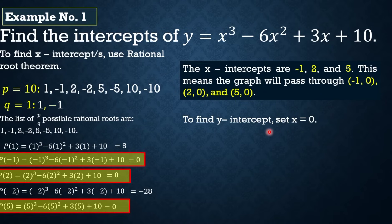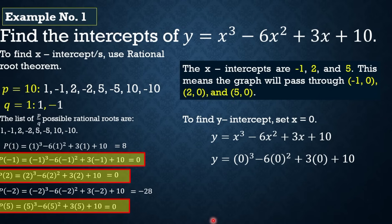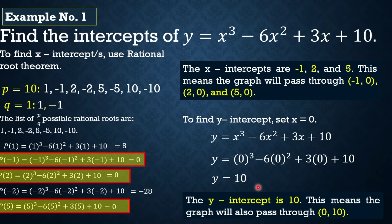Ngayon naman yung y-intercept. Ang gagawin lang natin: set x = 0. Papalitan lang natin yung variable x ng 0 sa polynomial function. Yung shortcut — kapag nag-substitute tayo ng 0, kung ano yung constant term yun lagi ang sagot. So y = 0³ - 6(0)² + 3(0) + 10. Therefore, y = 10 and the y-intercept is 10. This means that the graph will also pass through (0, 10).